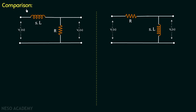Moving on to the comparison between the two RL circuits: in the first circuit the output voltage is measured across the resistor, and in the second circuit the output voltage is measured across the inductor. The key differentiating factor between the two circuits is the position of the inductor. The impedance of the inductor equals SL, where S is the frequency-dependent term, so changing frequency changes the inductor's behavior and therefore the circuit's behavior.